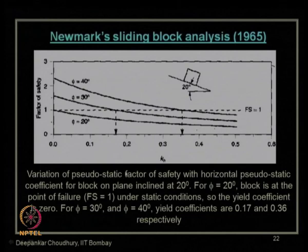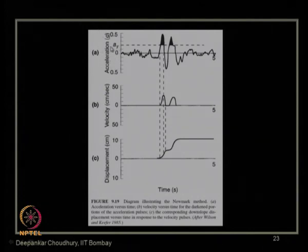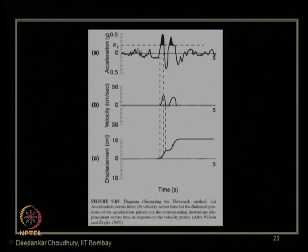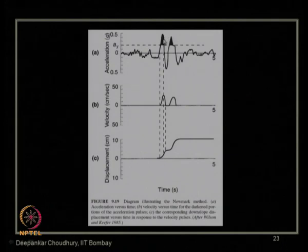This is how factor of safety and displacement are calculated using Newmark's sliding block method. Suppose you have a yield acceleration AY and a known acceleration-time profile. The shaded areas above AY in the acceleration-time history are responsible for failure or sliding of the slope. Areas below AY mean the slope is stable in that region.